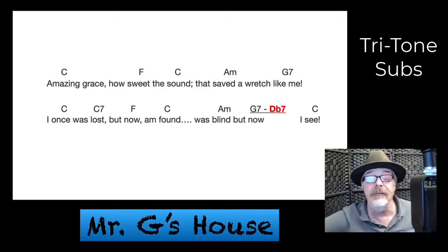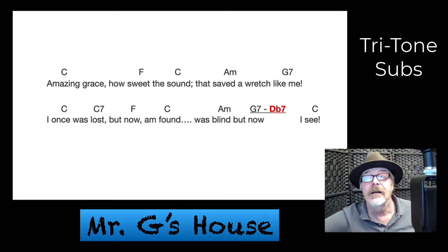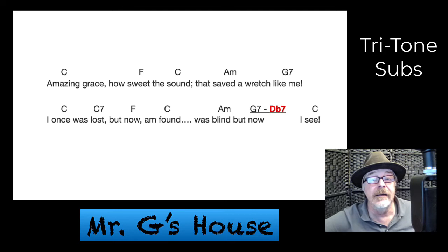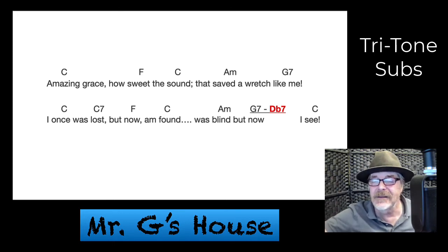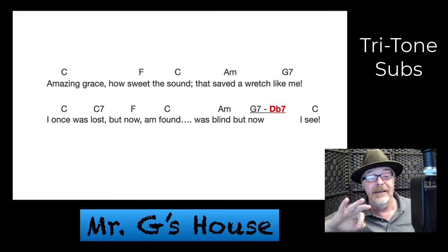Amazing Grace in the key of C. Amazing Grace, how sweet the sound that saved a wretch like me. I once was lost but now I'm found, I was blind but now I see. See how that works? Again, the tritone sub is a cool chord. I have a G7 up there on the word 'me' — 'that saved a wretch like me' — just a little bit.